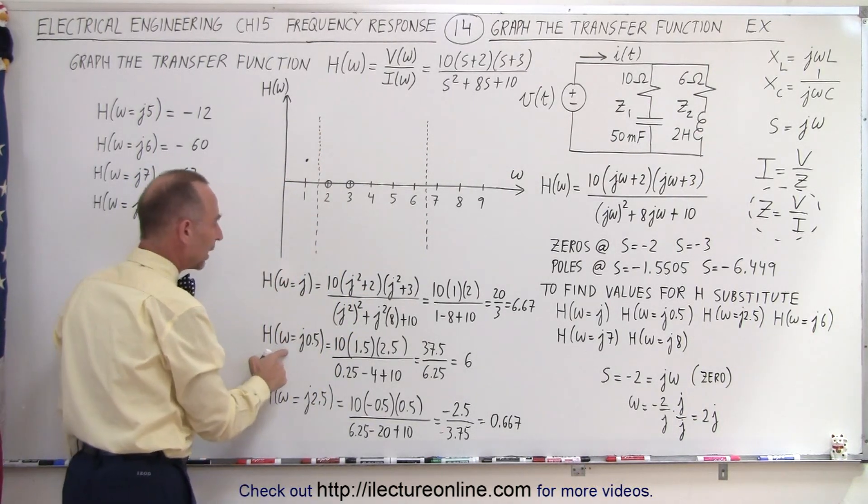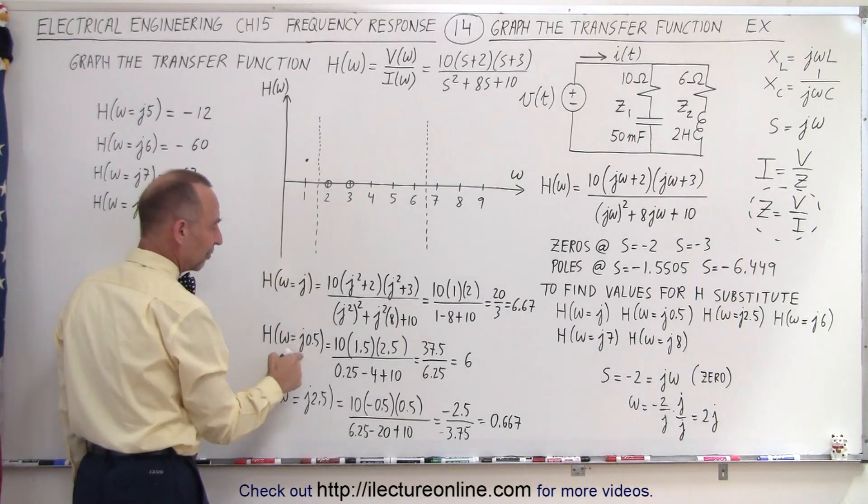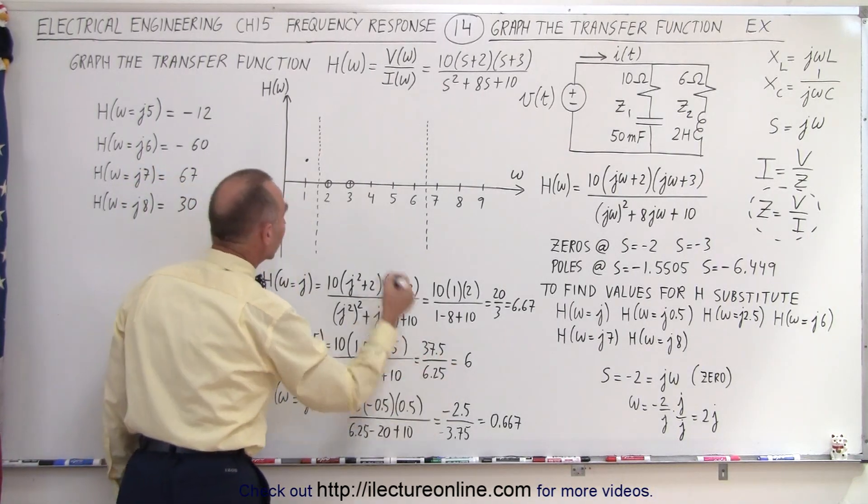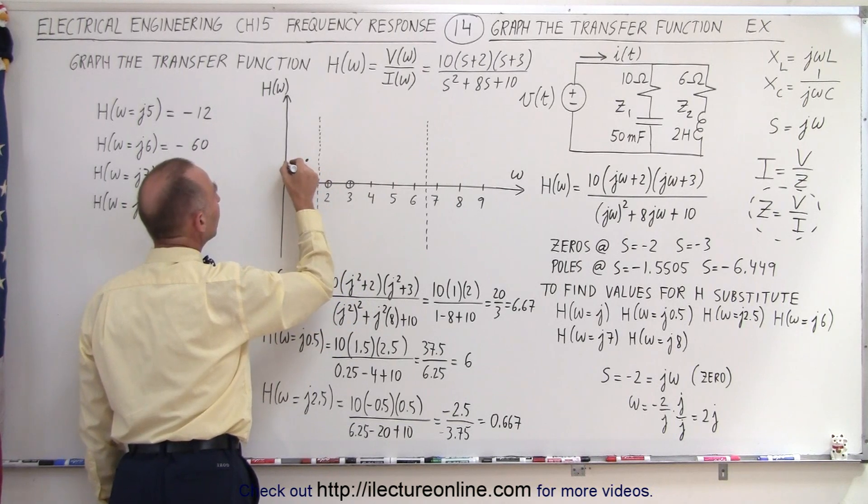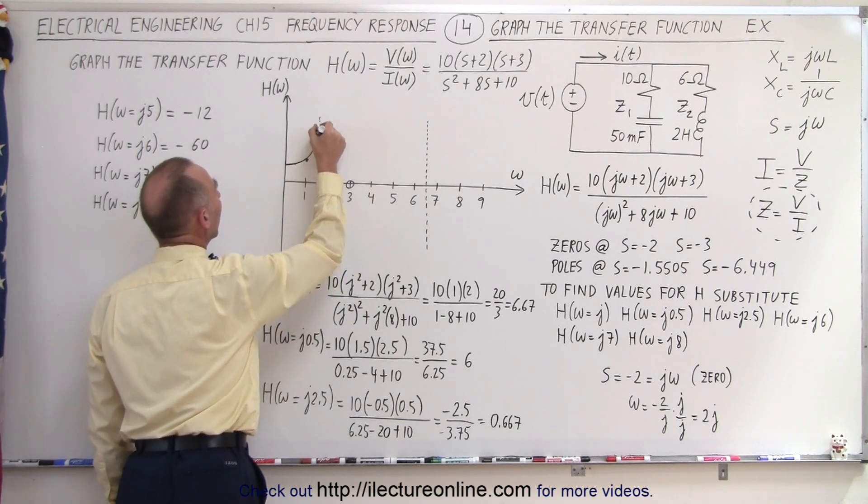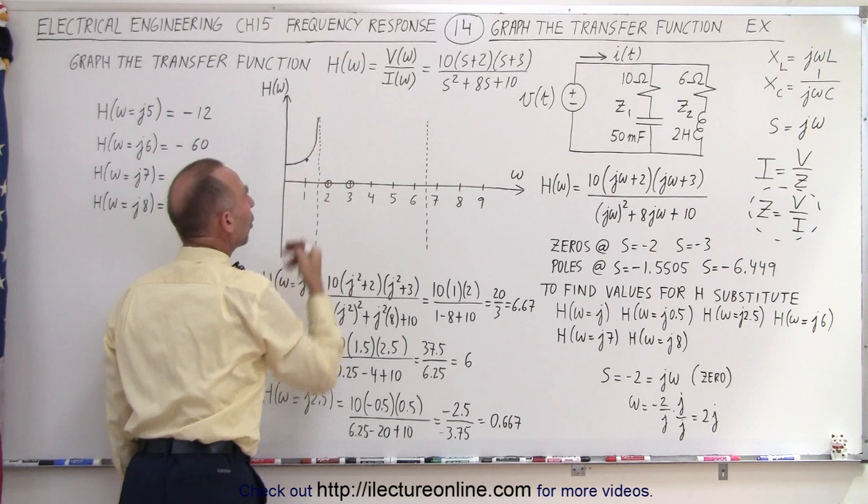Well, what about when omega is j0.5? Well, when we do the same calculation, we get it at 6. So we can see that the curve here looks kind of like this and then asymptotically reaches the pole.